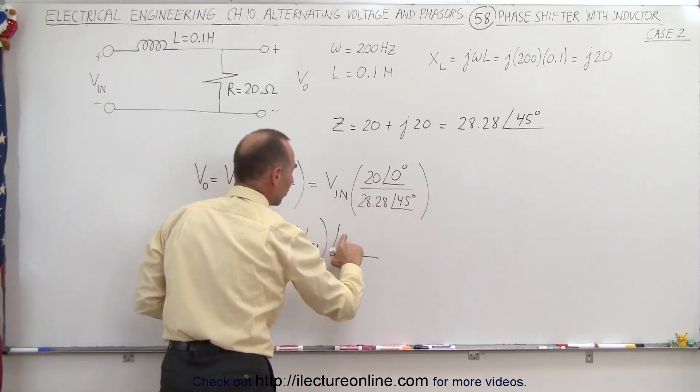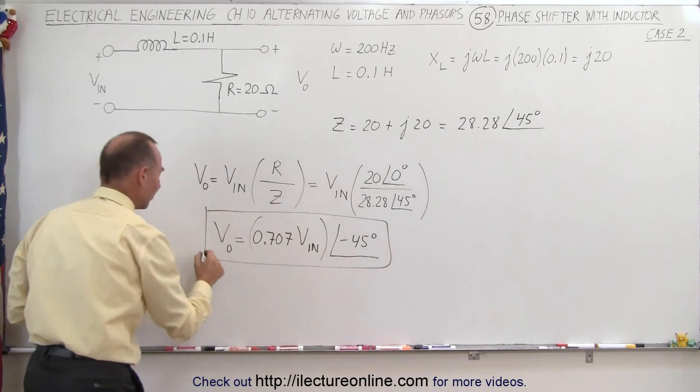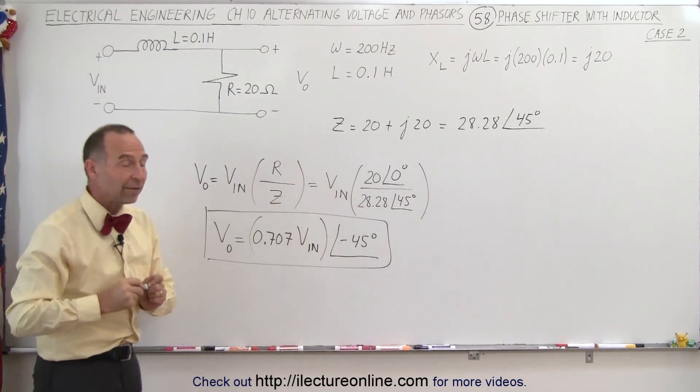0 minus 45 is minus 45 degrees. And notice we again have a phase angle of 45 degrees, but it's in the negative direction rather than the positive direction.